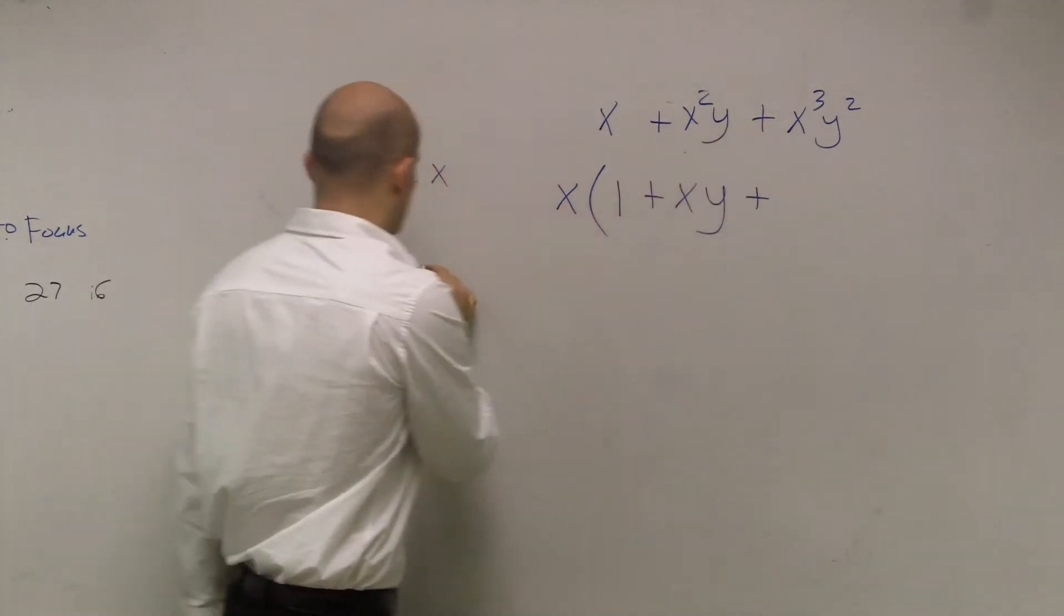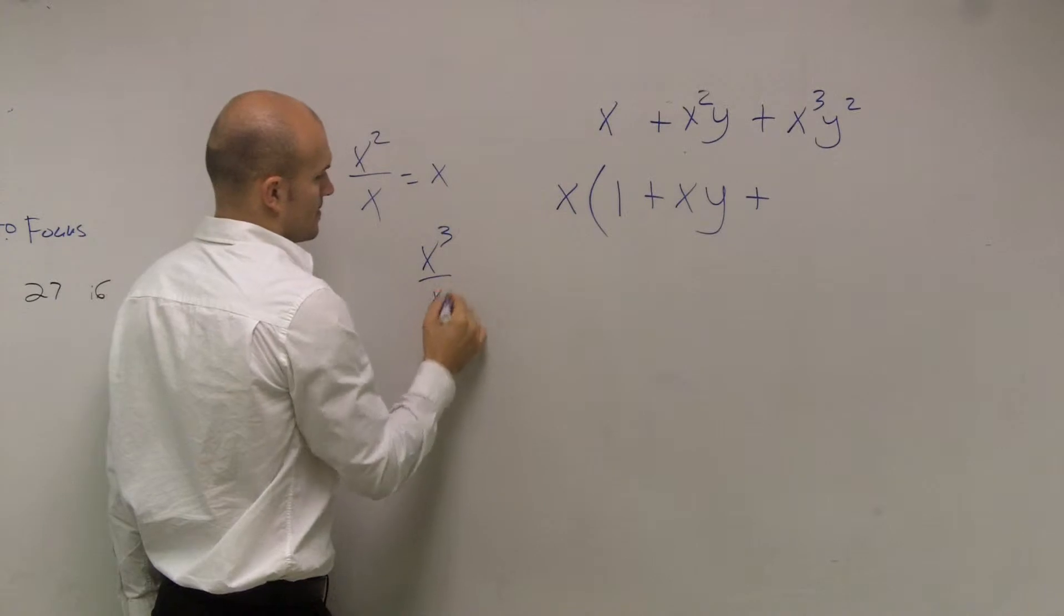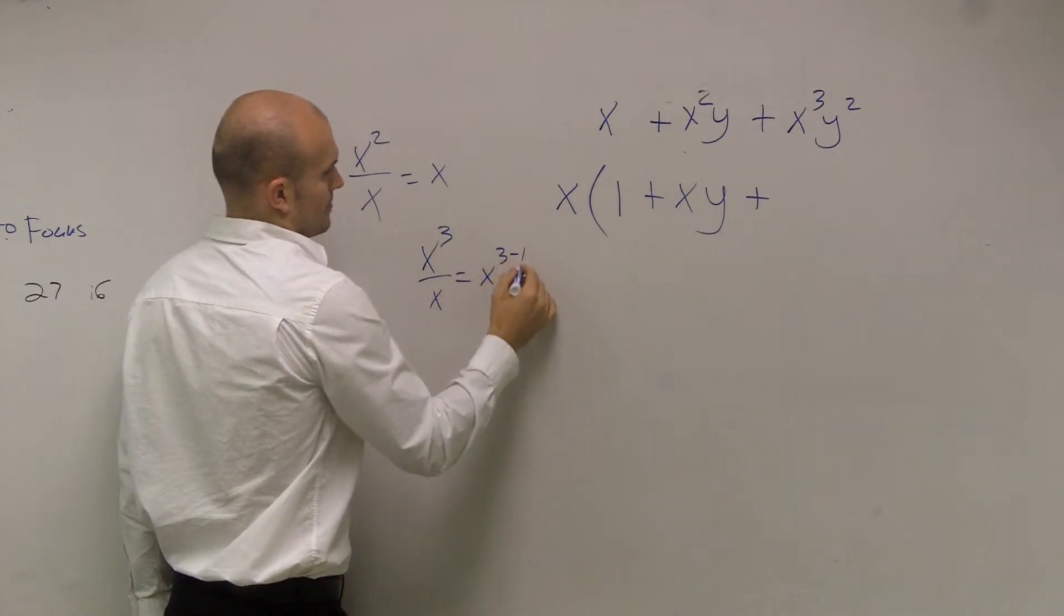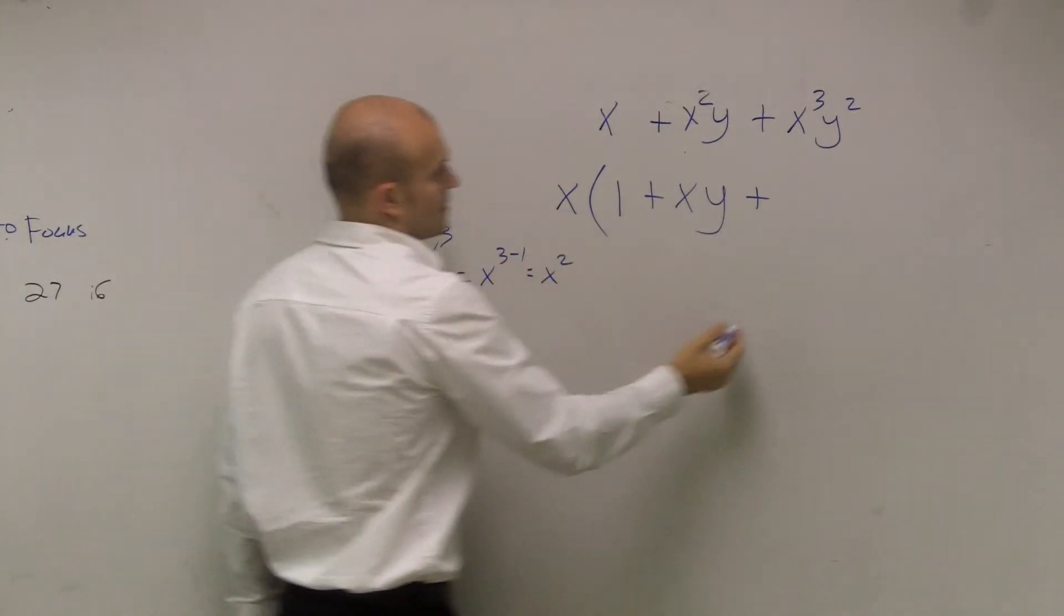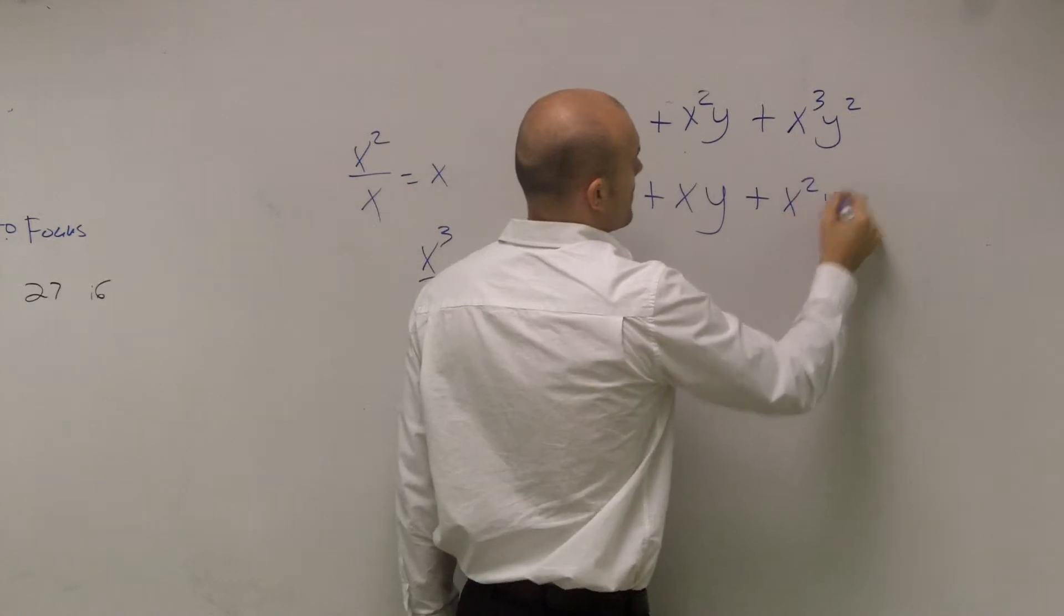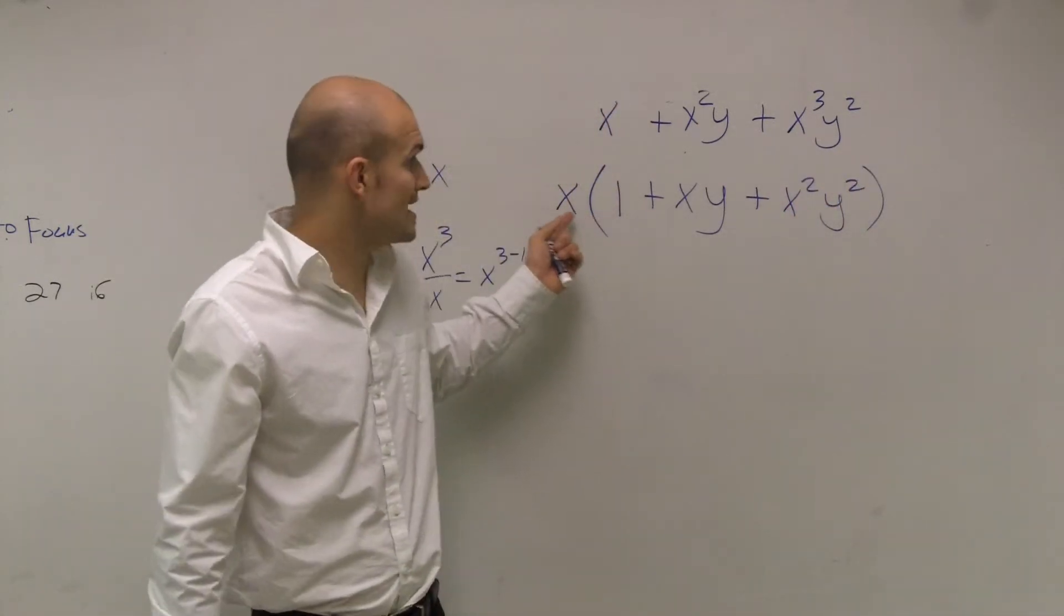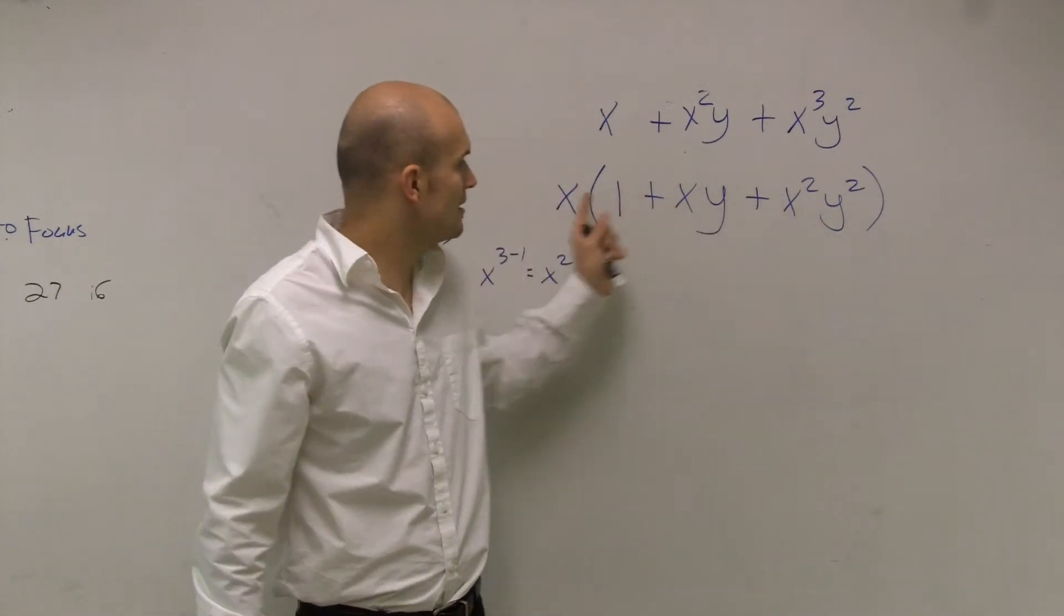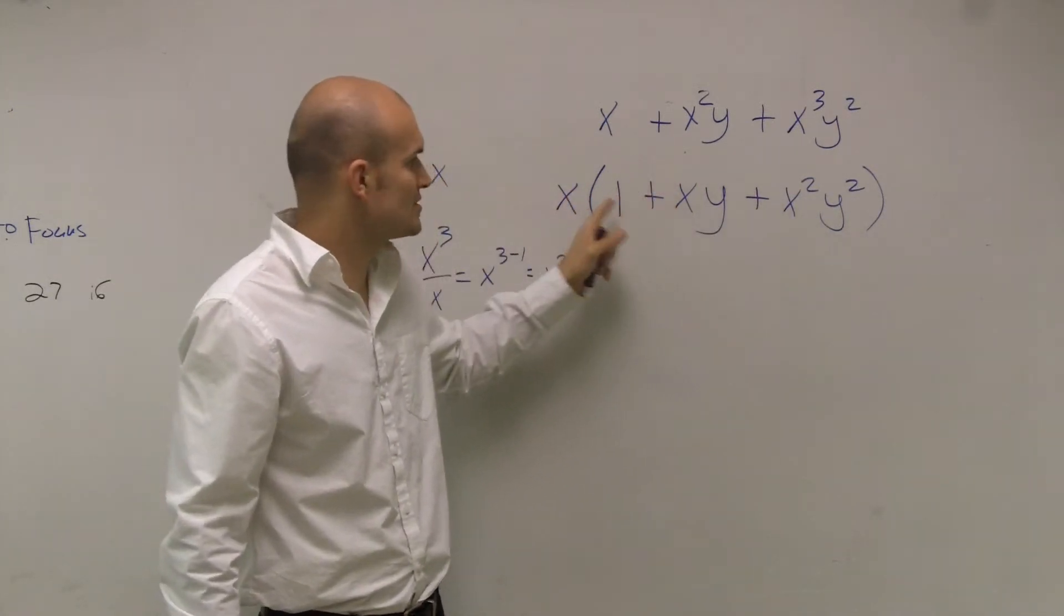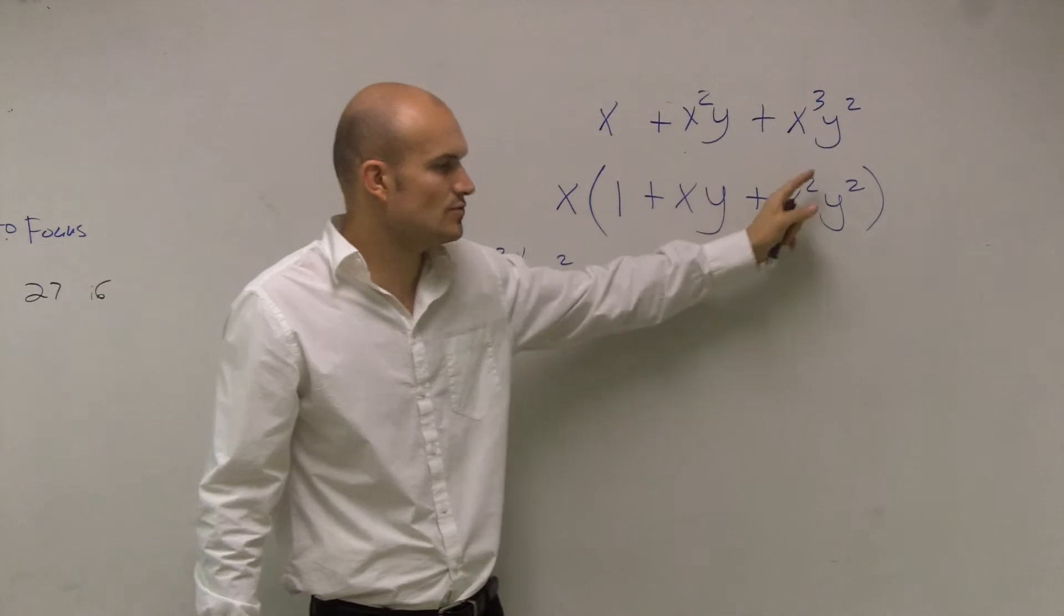Plus x cubed, the rules of exponents, plus x squared, y squared. So therefore, my other factor is x, and then the other factor is 1 plus x times y plus x squared, y squared.